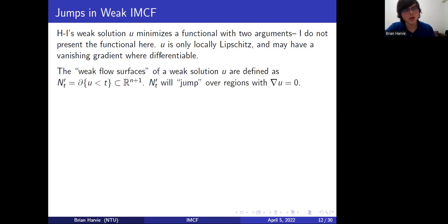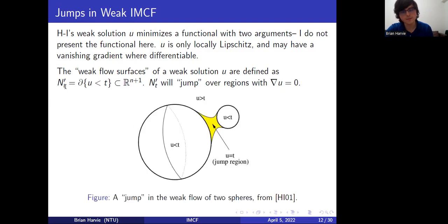You can interpret u as giving you a weak inverse mean curvature flow. Instead of considering the level sets of u, which might not be hypersurfaces, consider the boundary of the set {u < t} in ℝⁿ⁺¹ and call the weak flow surfaces in this case Σ'(t). The key feature of the weak flow surfaces is that they might jump over regions where the gradient of u equals zero.